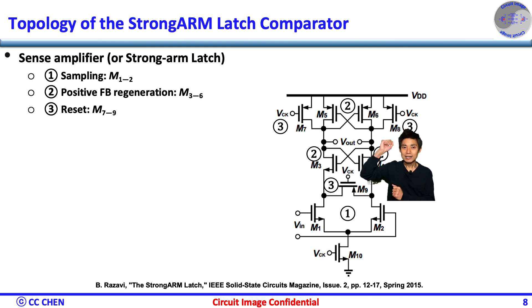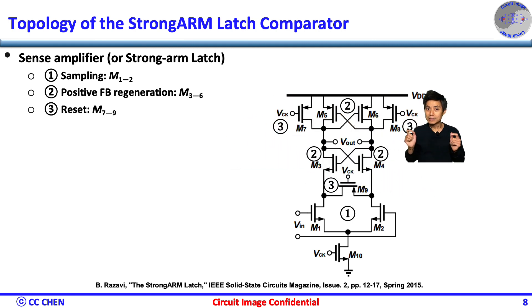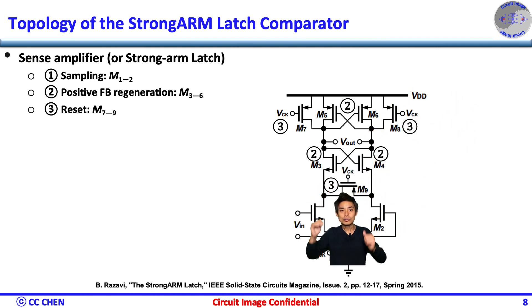At the clock's falling edge and logical reset, the M7 and M8 reset device will pull the output to VDD and M9 will also short the source of M3 and M4 to remove the memory effect of the previous result output levels.